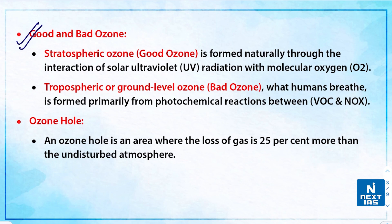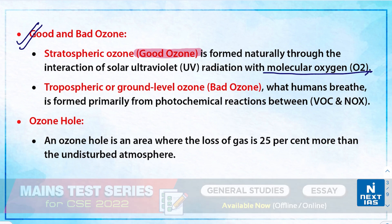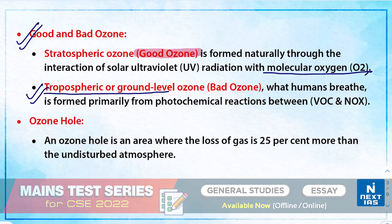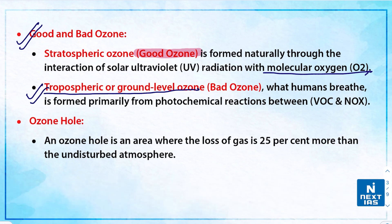There is good ozone and bad ozone. The stratospheric or good ozone is formed naturally through the interaction of solar ultraviolet radiation with molecular oxygen. The bad ozone is also termed tropospheric or ground-level ozone — this is generally what humans breathe. It is formed primarily from photochemical reactions between volatile organic compounds such as hydrocarbons and chlorofluorocarbons, and oxides of nitrogen.